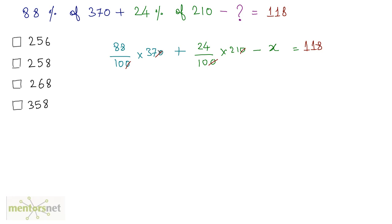Now we have 88 times 37, which is 3256, divided by 10. Plus 24 times 21 equals 504, so 504 by 10, minus x equals 118. So this is 325.6 plus 50.4 minus 118 equals x. 376 minus 118 equals x, which gives you 258. So the correct answer is option B.